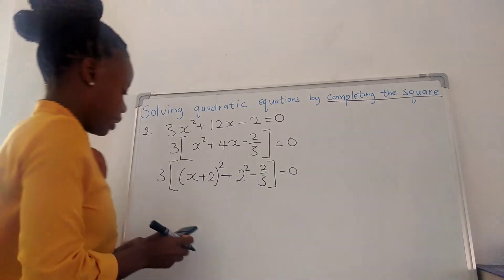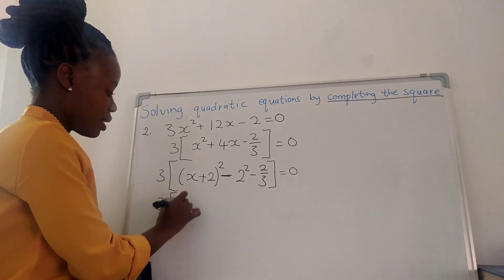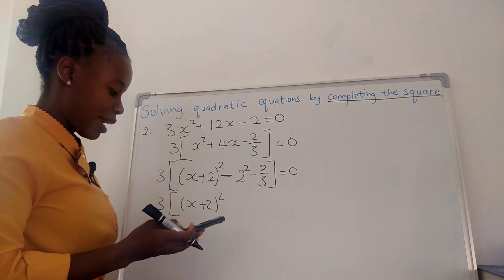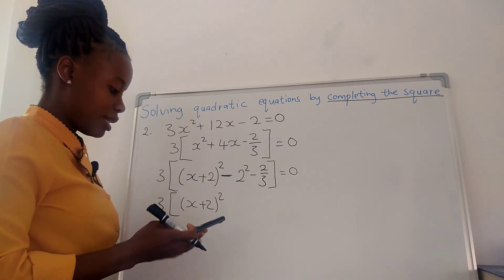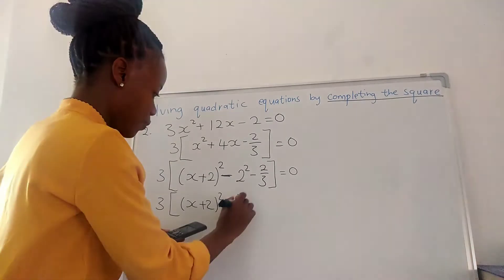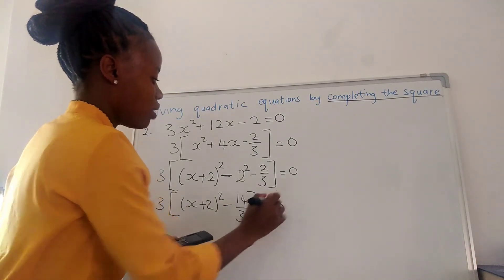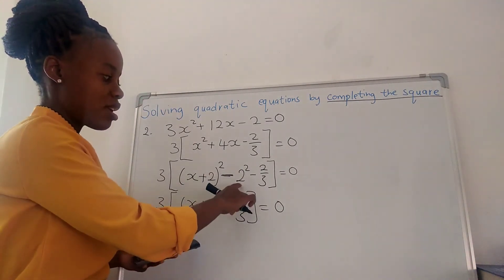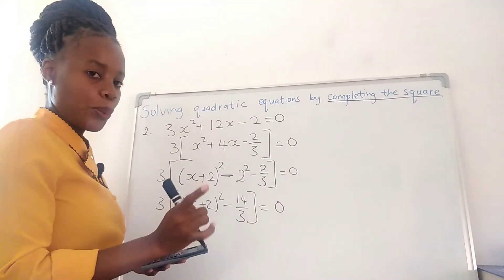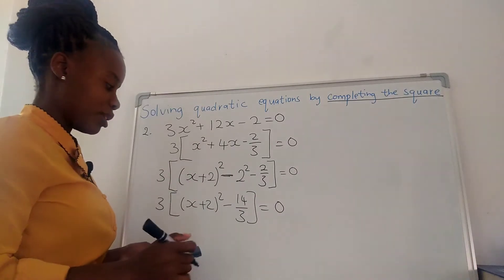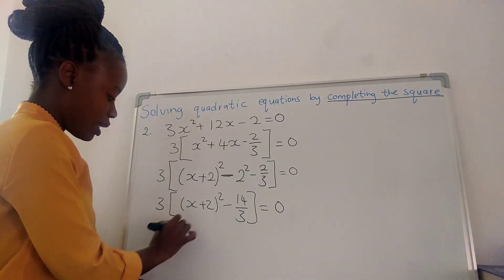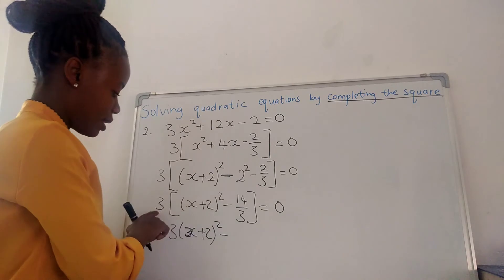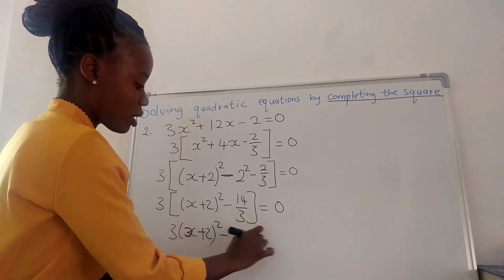2 squared minus 2 over 3. Now we have 3 times x plus 2 squared. This is negative 4, so negative 4 minus 2 over 3 is negative 40 over 3, equals to 0. When you punch your calculator, you start with negative 4 minus 2 over 3 — negative 40 over 3. So this is going to be 3 times x plus 2 squared minus 40 equals to 0.